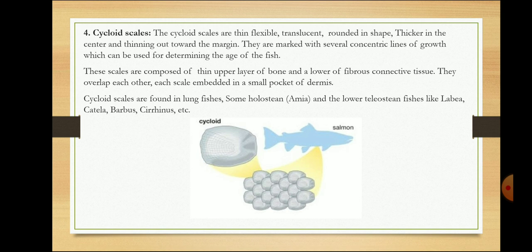Placoid scales are found in shark fishes; they are small in size but give roughness to the skin. The next type is cycloid scales. They are thin, flexible, and rounded in shape, thicker in the center and thinning out towards the margin. They are marked with several concentric lines of growth which can be used for determining the age of the fish. These scales are composed of a thin upper layer of bone and a lower layer of fibrous connective tissue. They overlap each other, and each scale is embedded in a small pocket of dermis. Cycloid scales are found in lungfishes and lower teleost species like Labeo, Catla, and Cirrhinus.